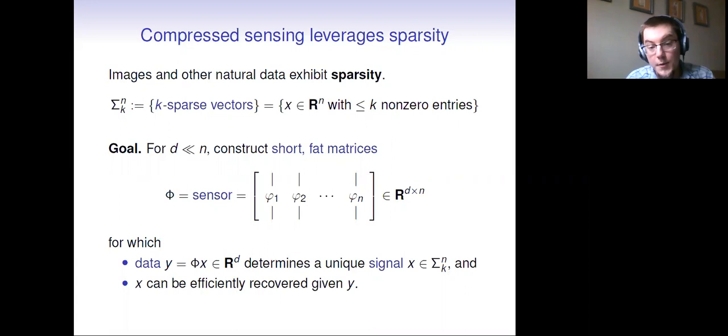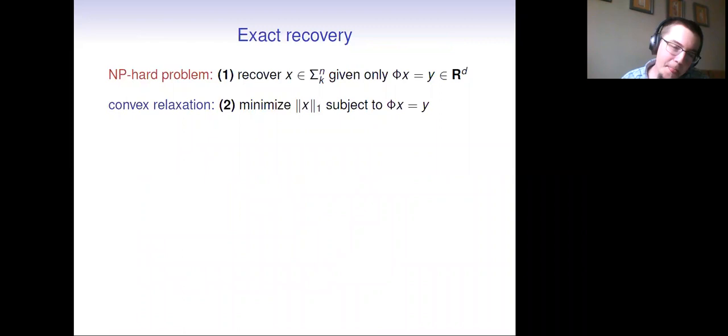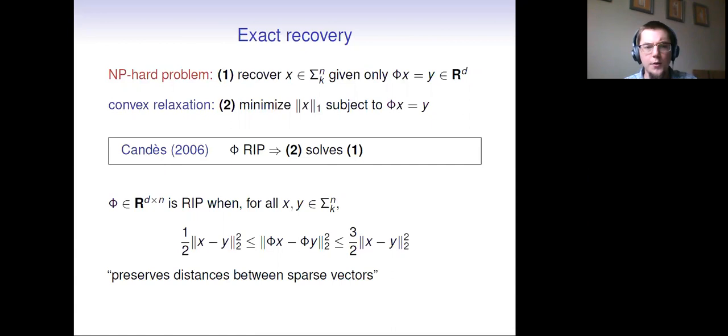The overarching goal of compressed sensing, in order to make it work, you're trying to construct short fat matrices. You want to have, for d much less than n, you'd like to build these short fat matrices. I'm going to call it a sensor here, where you've got data that you're actually observing. This is maybe phi times x, which I'm going to call y. And you want to be able to guarantee that this is determining a unique sparse signal x in sigma-k,n. And not only do you want x to be uniquely determined, you want to be able to get it back. If you can't get it back efficiently, then there's not much hope.